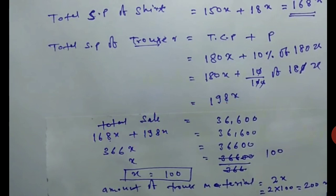The value of x is 100. Now if we need to find the amount of trouser, which is 2x, we multiply: 2 times 100 equals 200 meters. So the answer is 200 meters.